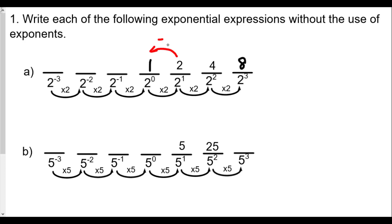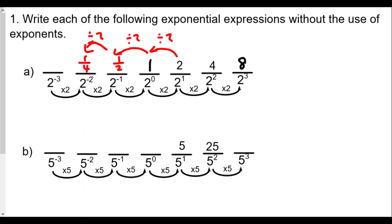Moving in the other direction means dividing by 2. So 2 to the negative 1 — we divide 1 by 2 to get one-half. For 2 to the negative 2, we divide one-half by 2 to get one-fourth. And for 2 to the negative 3, we divide one-fourth by 2 to get one-eighth.